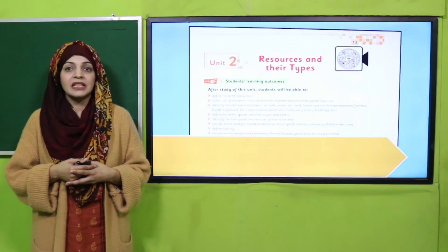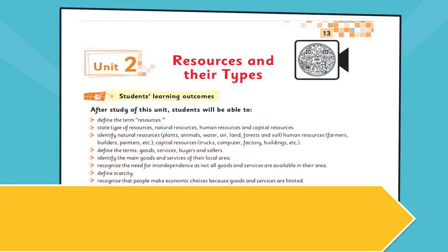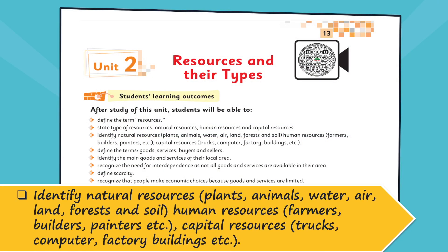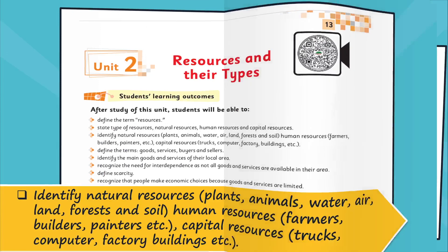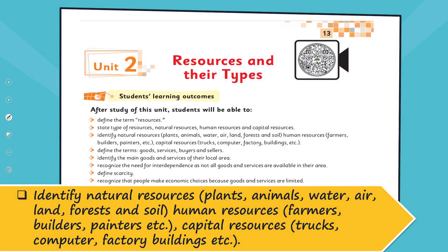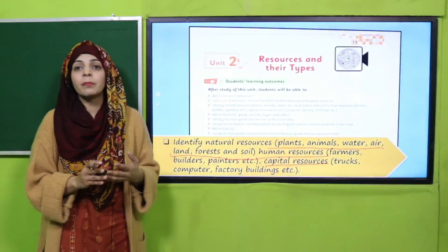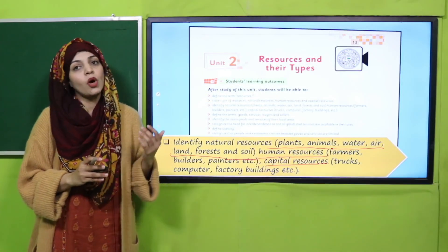Now let's quickly move towards page number 13 and have a look at our SLO. You have already completed it. You have already identified the natural resources — plants, animals, water, air, land, forest — and human resources and capital resources. But because today we will make a project, we will revise this SLO again.